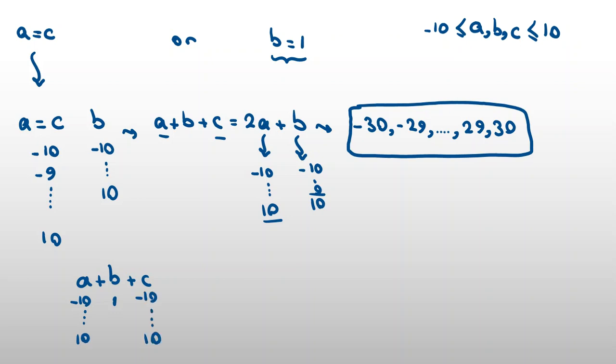So if I want to see, it will be from negative 10, negative 10, negative 20 plus 1, negative 19. And the last case will be 10, 10, 1, which will be 21. So here we will see all the answers that we have here we've calculated in this part. So our only answers for a plus b plus c is from negative 30 to 30.